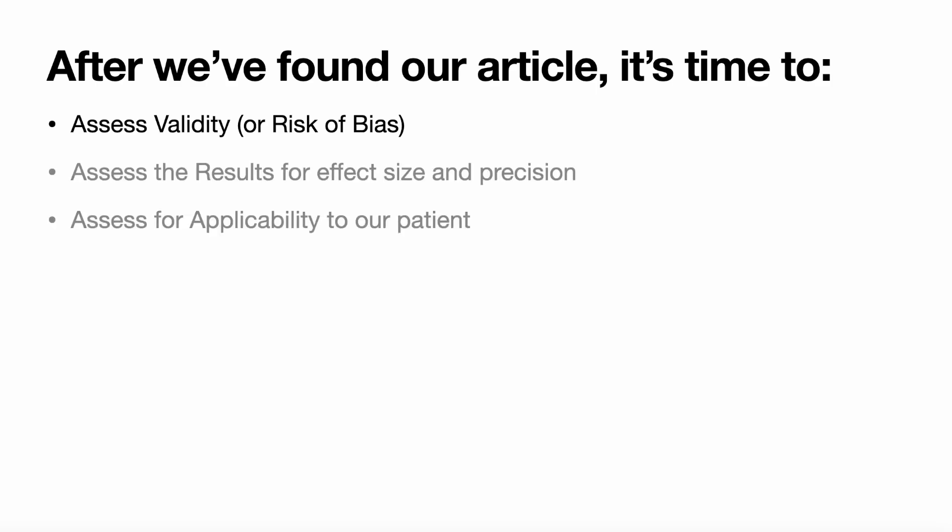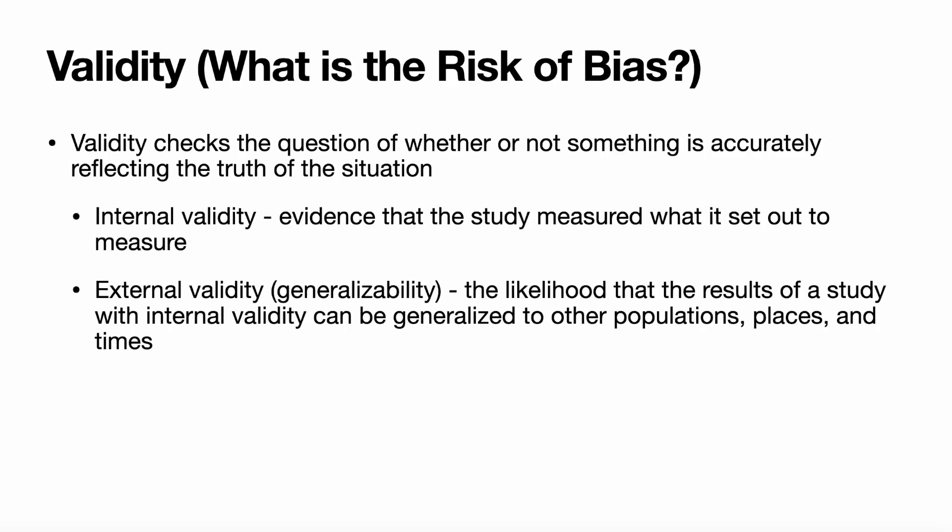The first thing we do is assess the article for validity, or risk of bias. Validity asks the question: what is the risk of bias — is something accurately reflecting the truth of the situation? There are two types of validity. Internal validity answers the question: did the study answer the question it set out to initially answer? External validity is generalizability — the likelihood that the results of a study with internal validity can be generalized to other populations, places, and times.